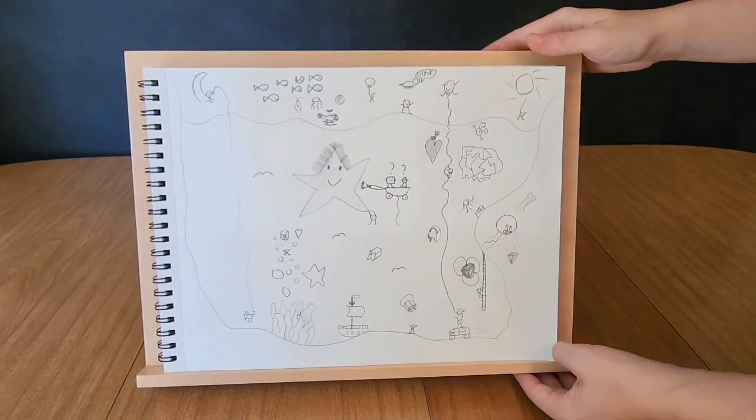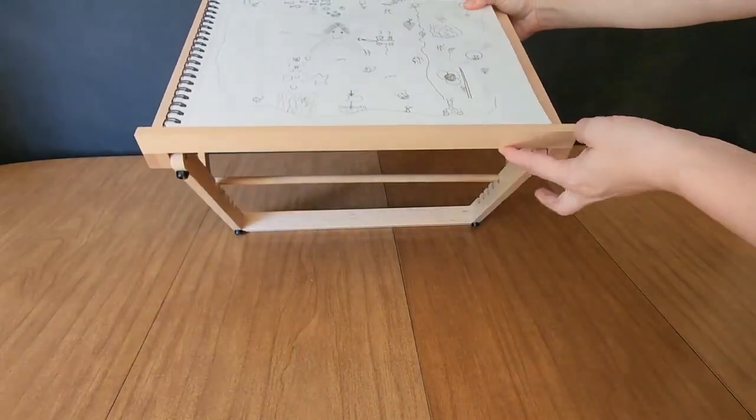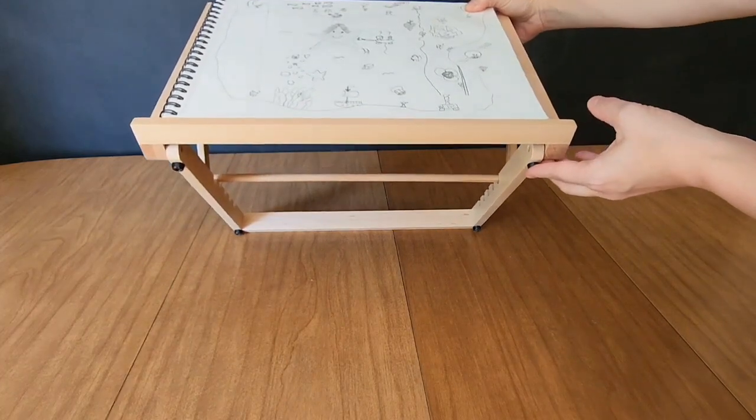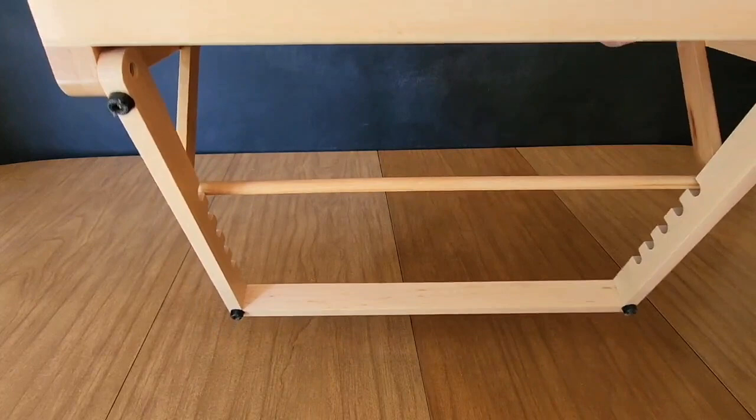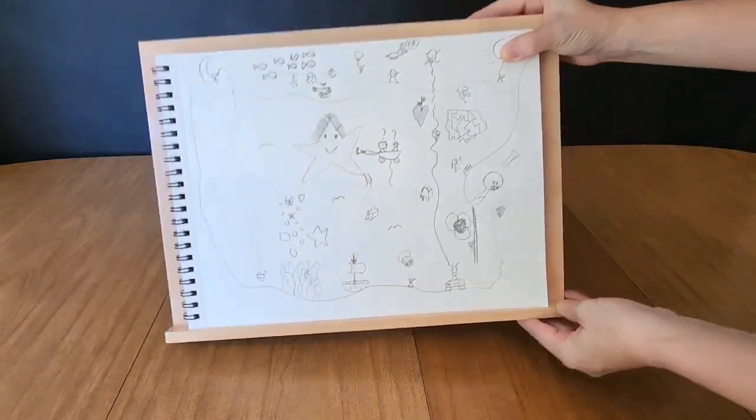My son loves to draw, so I recently got him this wooden easel by Falling in Art. I really like it because it has rubber stoppers on the bottom, so when you put the easel on the table and are drawing on it or putting pressure on your paper, the little stoppers keep it in place very nicely.